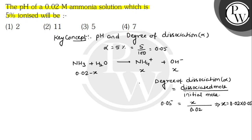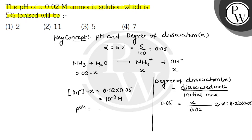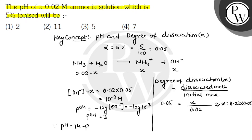तो सिर्फ आपको यहाँ पे value रखनी है — x का value आपके पास है. OH⁻ ion concentration हमें मिला, which is x = 0.02 × 0.05. और इनको multiply किया जाए तो यह आएगा 10⁻³ M. और अगर यहाँ से pOH निकालें, तो pOH = −log[OH⁻] = −log(10⁻³), तो pOH = 3, क्योंकि log 10 का value 1 होता है. तो pH = 14 − pOH = 14 − 3, which is 11.